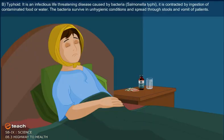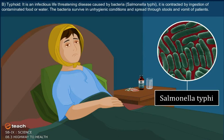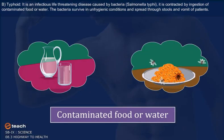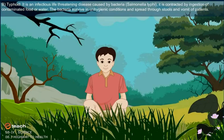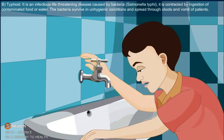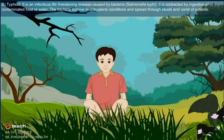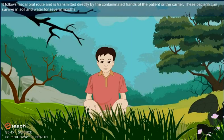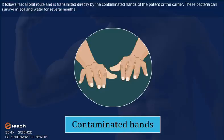Typhoid is an infectious, life-threatening disease caused by the bacteria Salmonella typhi. It is contracted by ingestion of contaminated food or water. The bacteria survive in unhygienic conditions and spread through stools and vomit of patients. It follows the fecal-oral route and is transmitted directly by the contaminated hands of the patient or the carrier. These bacteria can survive in soil and water for several months.